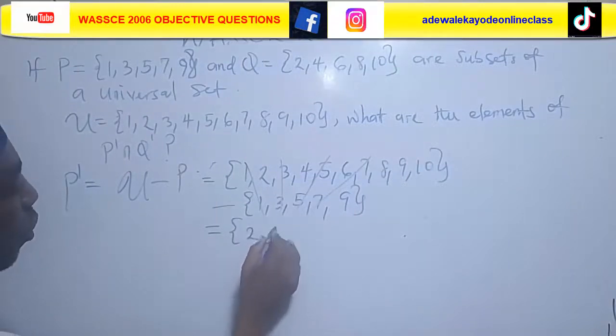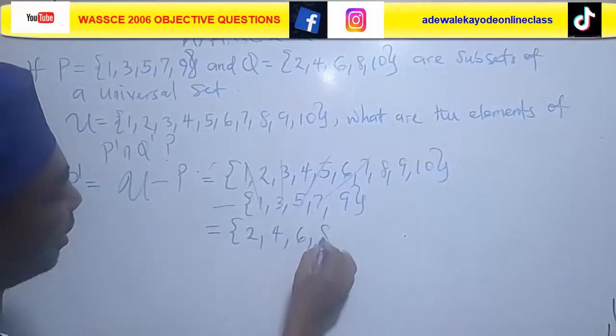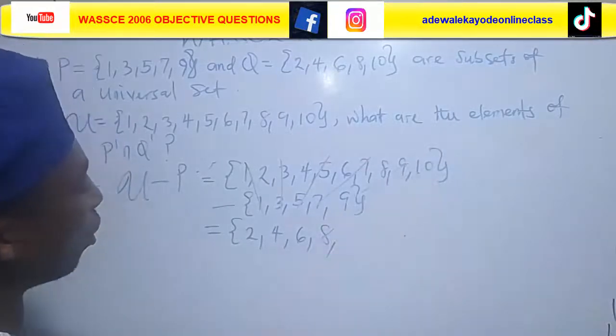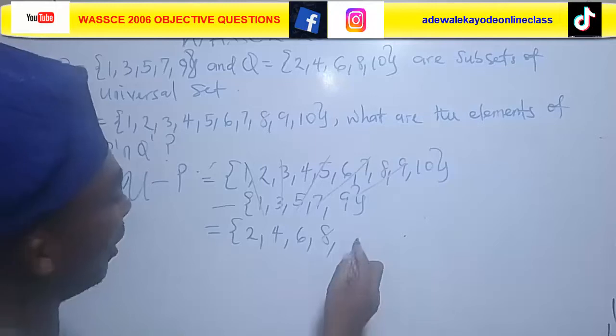Those are the numbers, those things you cannot see in set P but we have them in universal set. That's {2, 4, 6, 8, 10}.